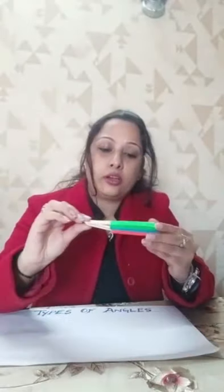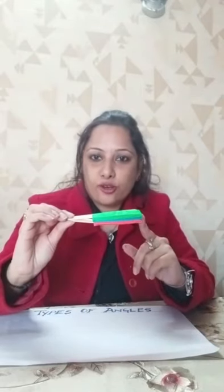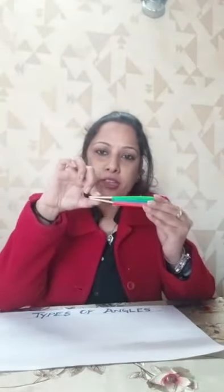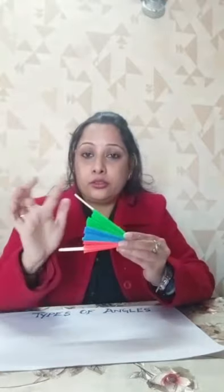If I close this paper fan, when two arms overlap, the angle formed is called a zero angle. And if I open this fan completely, this arm is going straight — so this is called a straight angle. Again: when horizontal and vertical arms meet at a point, the angle formed is called a right angle. Less than right angle is acute angle. More than right angle is obtuse angle. When two arms overlap, the angle formed is called a zero angle. When two arms go in opposite directions, the angle formed is called a straight angle.